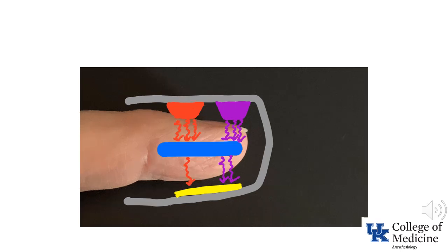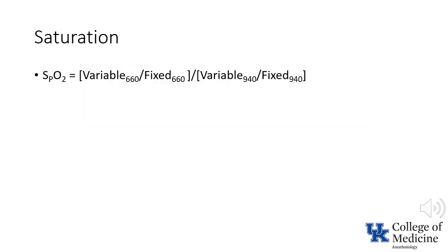In contrast, this illustration adds the element of deoxygenated blood as represented by the blue line overlying the finger. It shows that more of the red light is absorbed compared to the amount of infrared light that is absorbed. Effectively, what happens is that the pulse oximeter only looks at the red over infrared ratio for the pulsatile component of the signal.